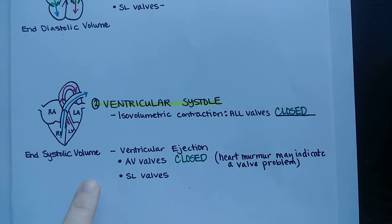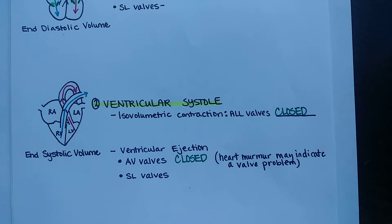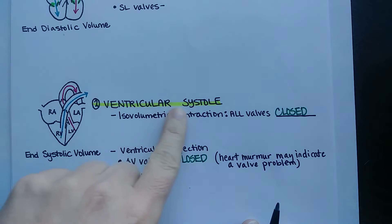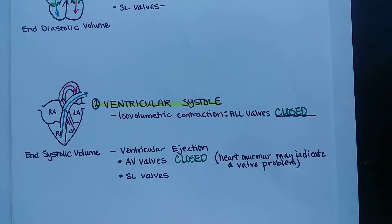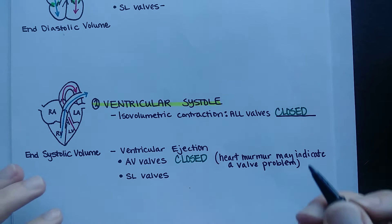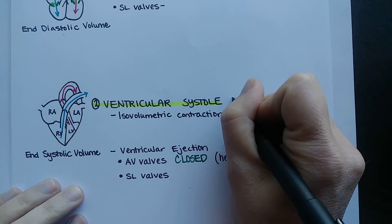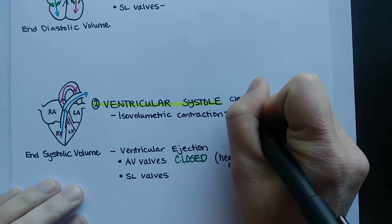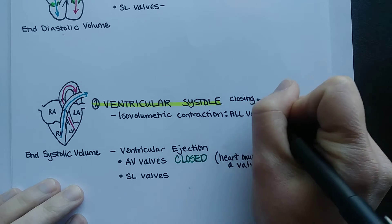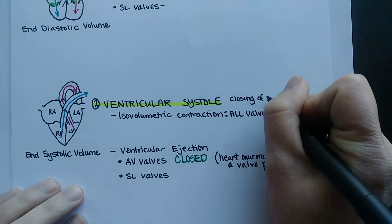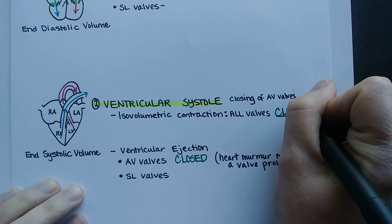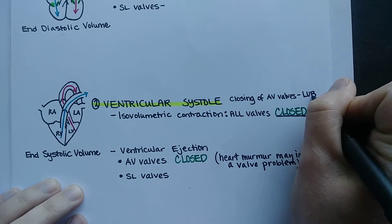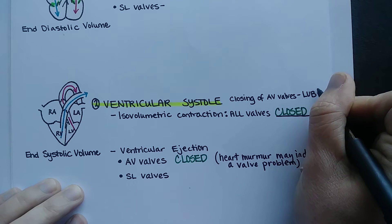When the AV valves slap closed at the beginning of ventricular systole, you can hear a 'lub' sound. So this phase actually starts with the closing of the AV valves, which produces that first 'lub' heart sound.